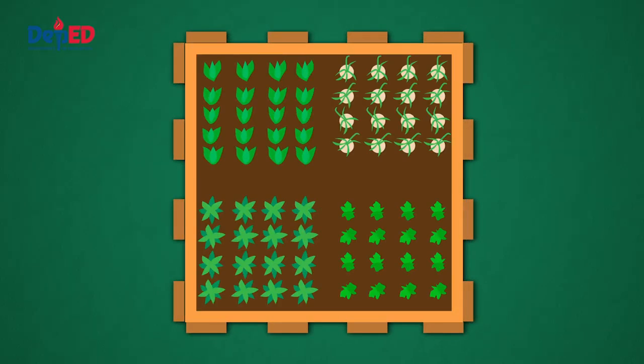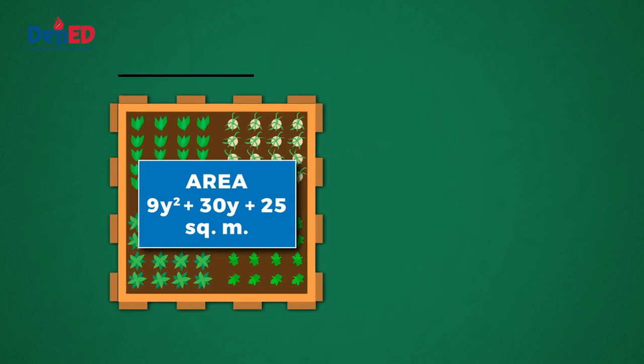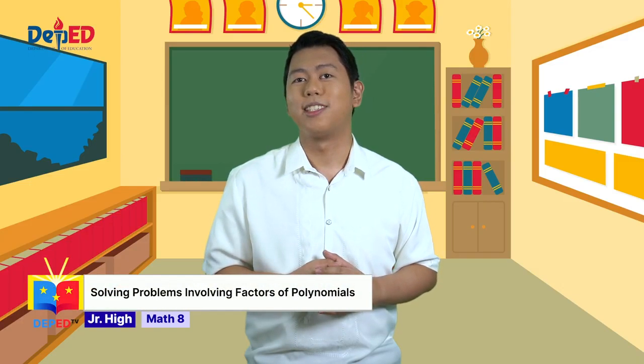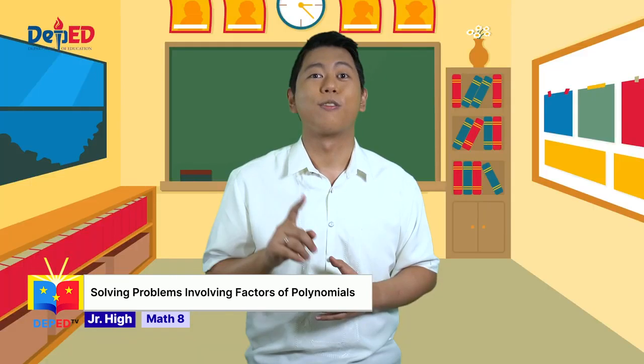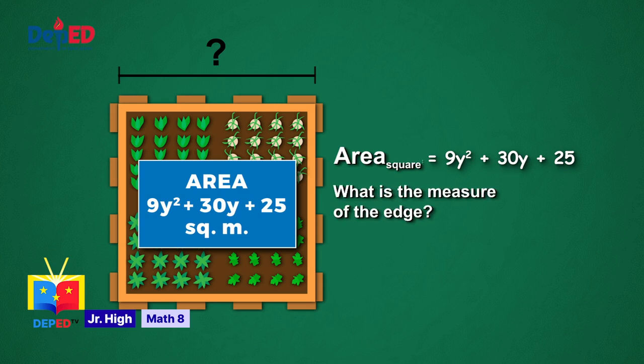Now look at this small vegetable garden. What is the shape? Its shape is a square, and the area of that square garden is 9Y squared plus 30Y plus 25 square meters. What polynomial expression represents the measure of each edge? There are many ways to solve a problem, and doing it step by step is one helpful strategy in tackling this. Let us identify what is given. First, the problem states that the garden has a square area and it measures 9Y squared plus 30Y plus 25 square meters. Next, what is asked? We are asked to find the measure or length of the edge.